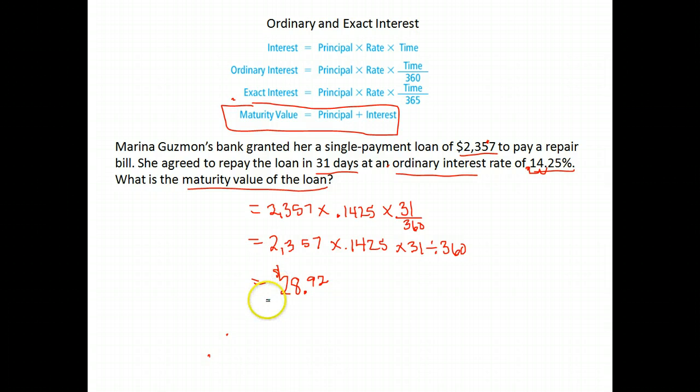That's my amount of interest. They wanted the maturity value of the loan. That means, how much do you end up paying back the original amount plus interest? So maturity value, that would be the $2,357 she borrowed originally, plus the $28.92 in interest. When we do that, we get $2,385.92.